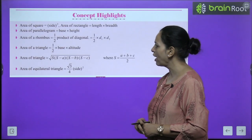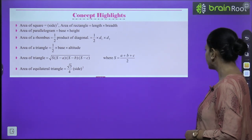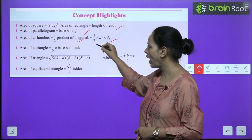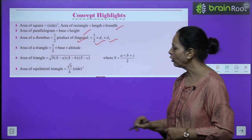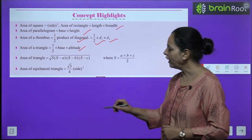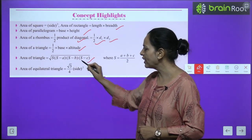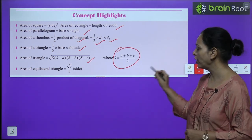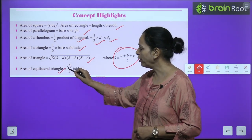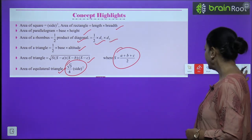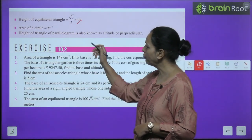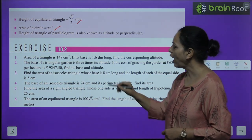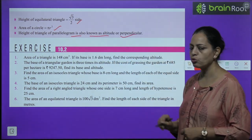Concept highlights: Area of square = side × side; area of rectangle = length × breadth; area of parallelogram = base × height; area of rhombus = ½ × d₁ × d₂; area of triangle = ½ × base × height; for three sides given use Heron's formula: √(s(s−a)(s−b)(s−c)) where s is the semi-perimeter; area of equilateral triangle = (√3/4)a²; height of equilateral triangle = (√3/2) × side; area of circle = πr².